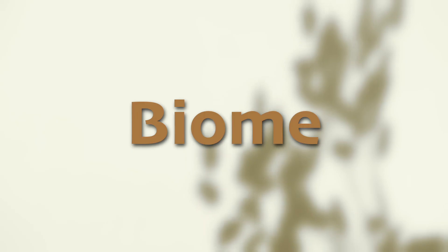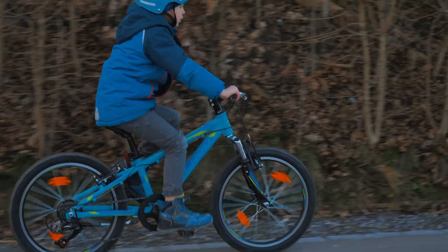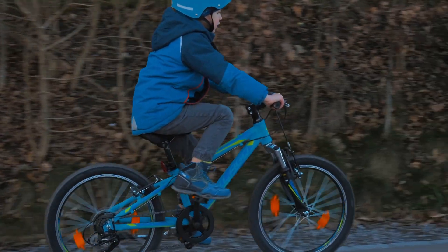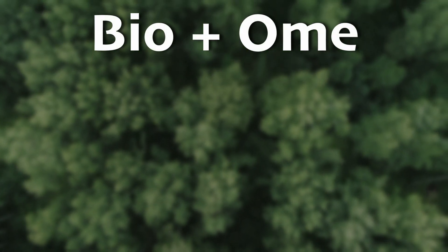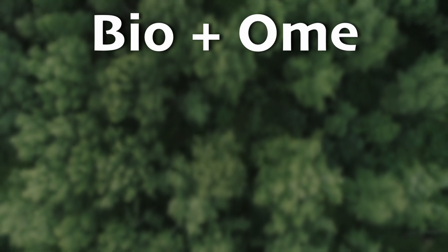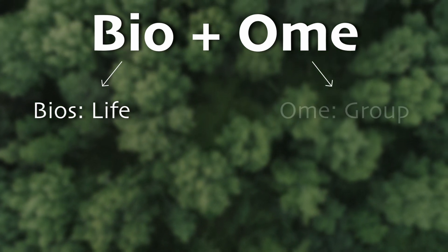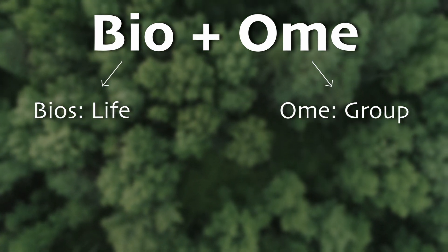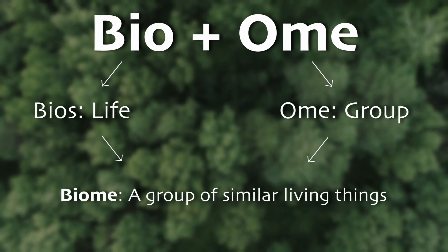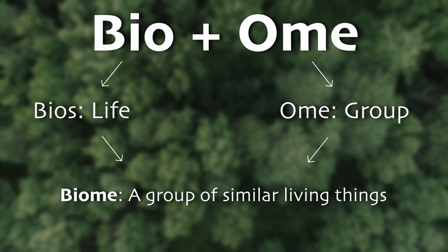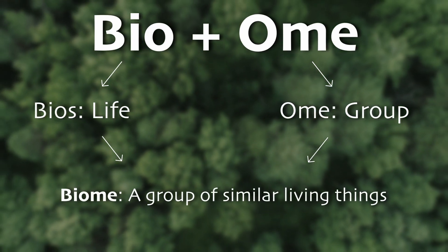Where do we get this word — biome? Does it mean two of something, like how a bicycle has two wheels? No. Let's split it up like this instead: bio plus om. The word biome comes from two Greek words: bios, which means life, and om, which means group. When you put these roots together, biome refers to a group of similar living things.